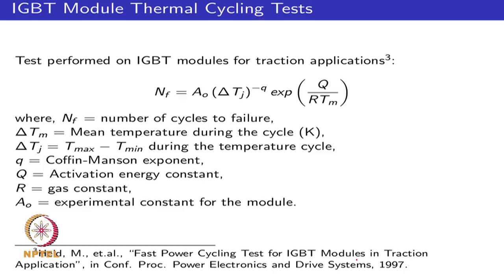The cyclic life to failure due to thermal cycling can be modeled by the Coffin-Manson equations. A research group in the mid-1990s used this to evaluate the life and impact of thermal cycling on power modules. They derived an expression showing that the junction temperature variation delta Tj and the mean junction temperature are factors that affect the number of cycles to failure.